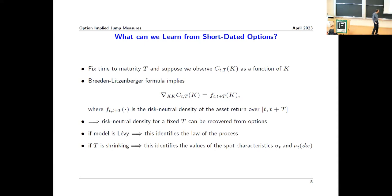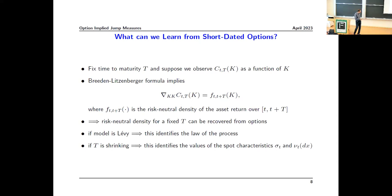Nu is a function that tells you the distribution over jump sizes — you can identify both sigma_t and the jump distribution from short-dated options. That's what's unique about short-dated options. There's also a second layer of things you can identify — how sigma_t or nu_t vary over time — but that's more involved. For this talk I'll start with jumps and then go back to volatility, even though the volatility literature is larger.